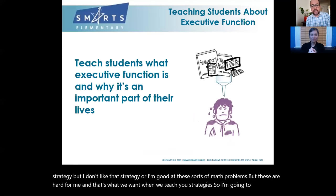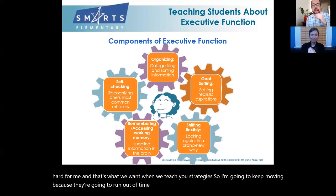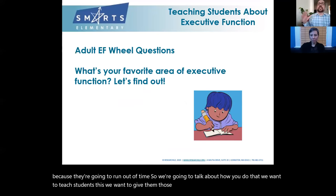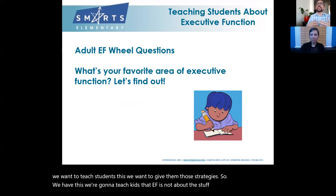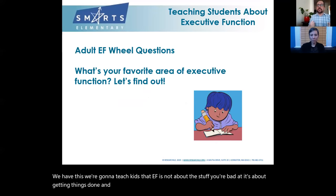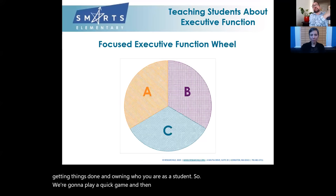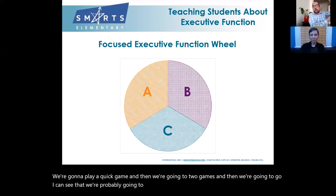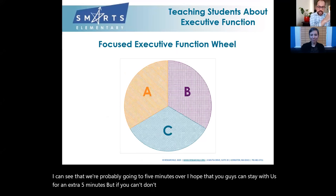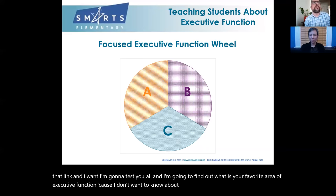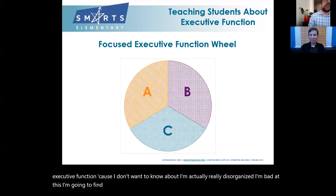We want to teach students that EF is not about the stuff you're bad at — it's about getting things done and owning who you are as a student. We're going to play a quick game: I want to find out what is your favorite area of executive function. Elizabeth is going to post a link to an adult EF wheel. I want you to think about whether you're picking more A's, B's, or C's as you go through.